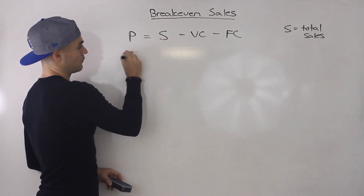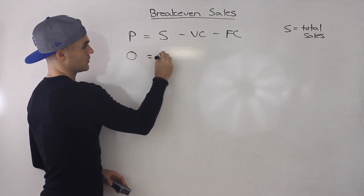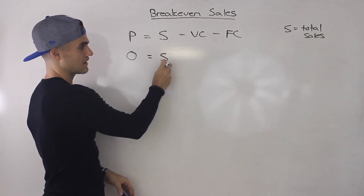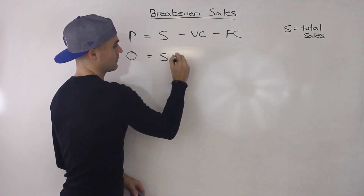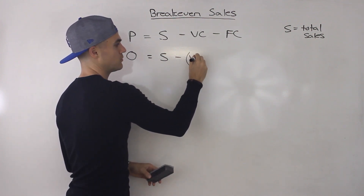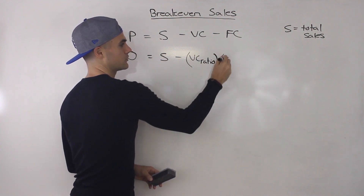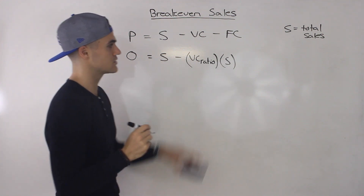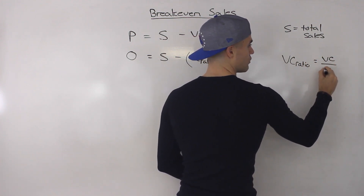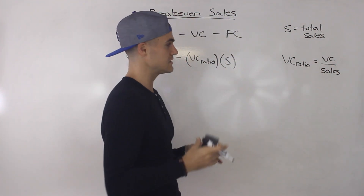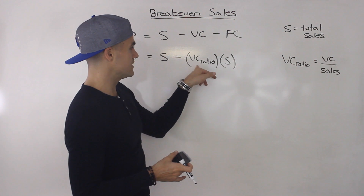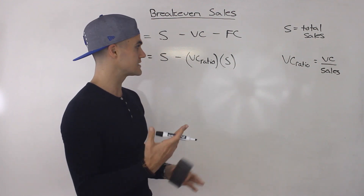When we're talking about breakeven, we're trying to find when profit equals zero. Now, how can we express the total variable costs in terms of total sales? We can take the variable cost ratio and multiply it by the sales. The variable cost ratio is variable costs over sales, and this can be on a total basis or a per unit basis — variable cost per unit over selling price per unit.